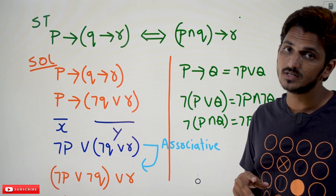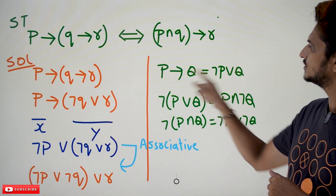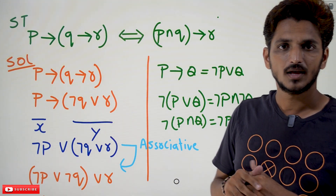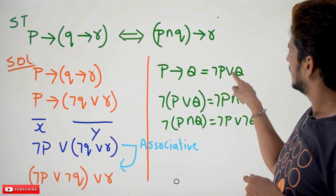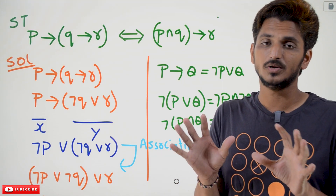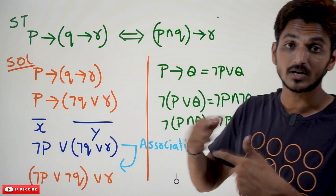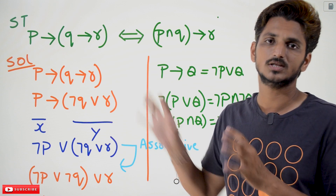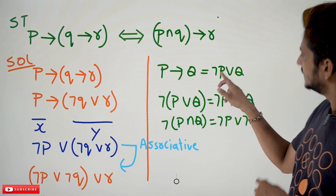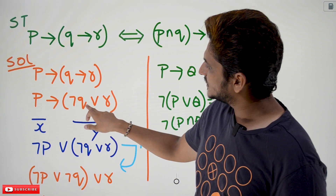Remember the formulas we discussed previously: P implies Q can be written as negation P disjunction Q. So whenever you convert this implies to disjunction, by using De Morgan's law we can convert disjunction to conjunction — that is what De Morgan's law says. We don't know whether by converting Q implies R into negation Q disjunction R will work directly, so we have to check different possibilities. With practice you will understand how to solve these equations quickly. First we convert Q implies R: similarly, Q implies R can be written as negation Q disjunction R.